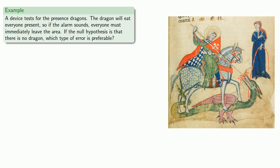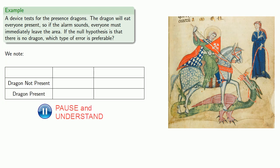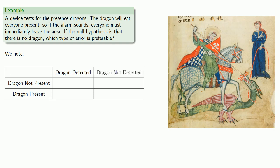So, it helps to set up a table, the true state of the world, either a dragon is not present, or the dragon is present. And we have two possibilities. Either we detect a dragon and sound the alarm, or we do not detect a dragon and don't sound an alarm.